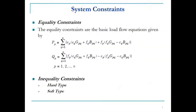System constraints can be classified as equality constraints and inequality constraints. Equality constraints are the load flow equations. Inequality constraints can be hard type or soft type, and include generator limits, transmission line limits, and thermal capacity.